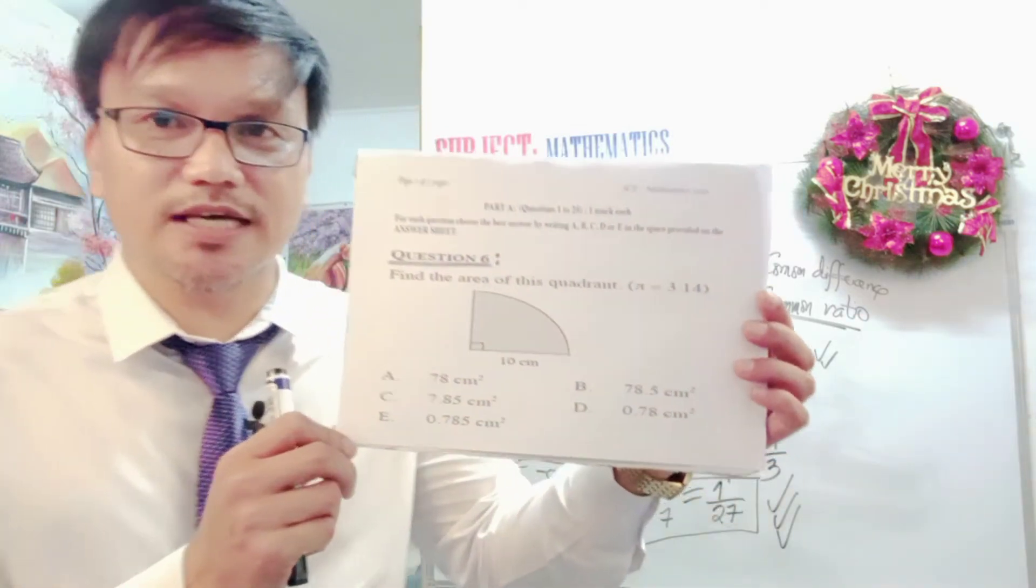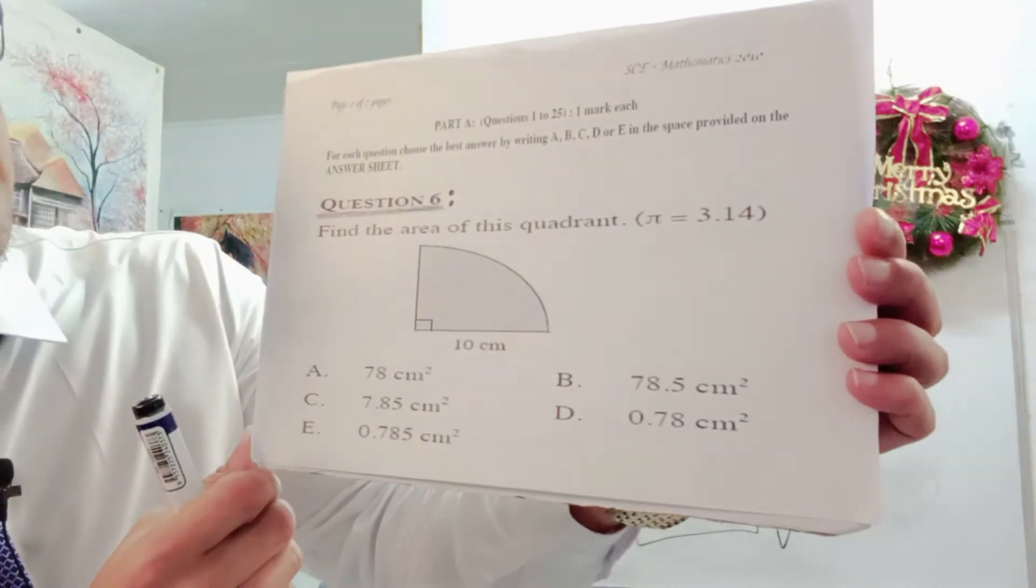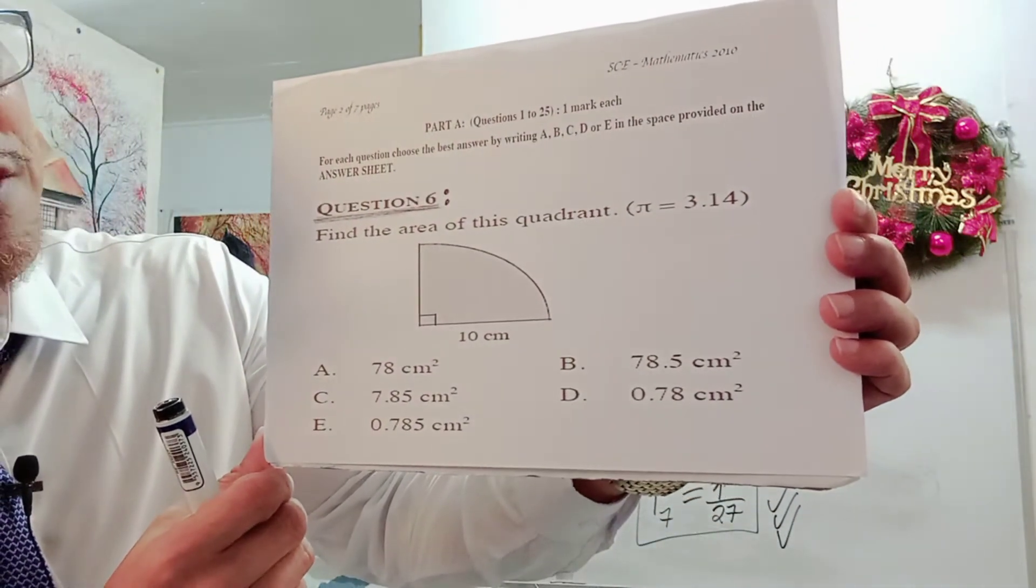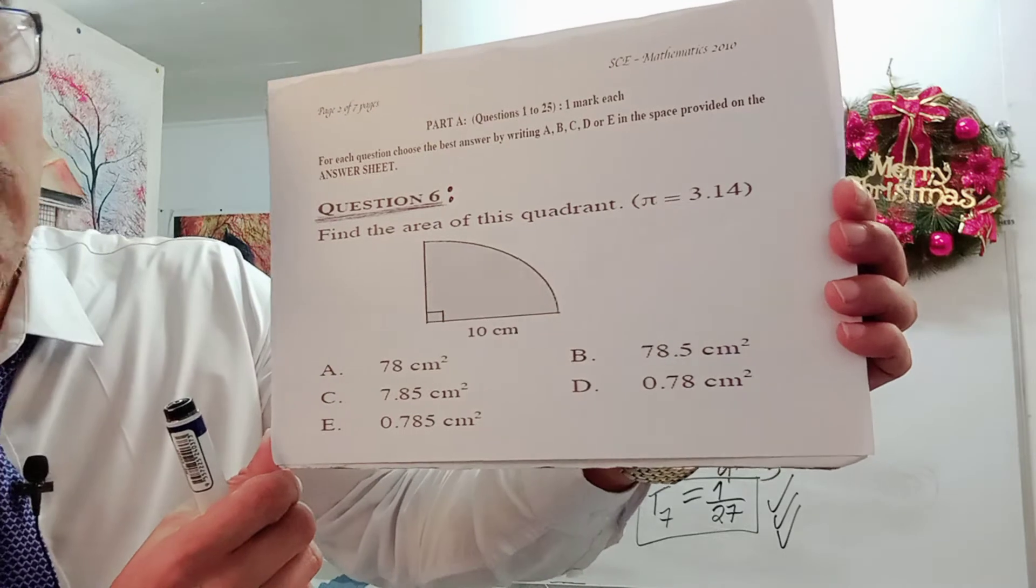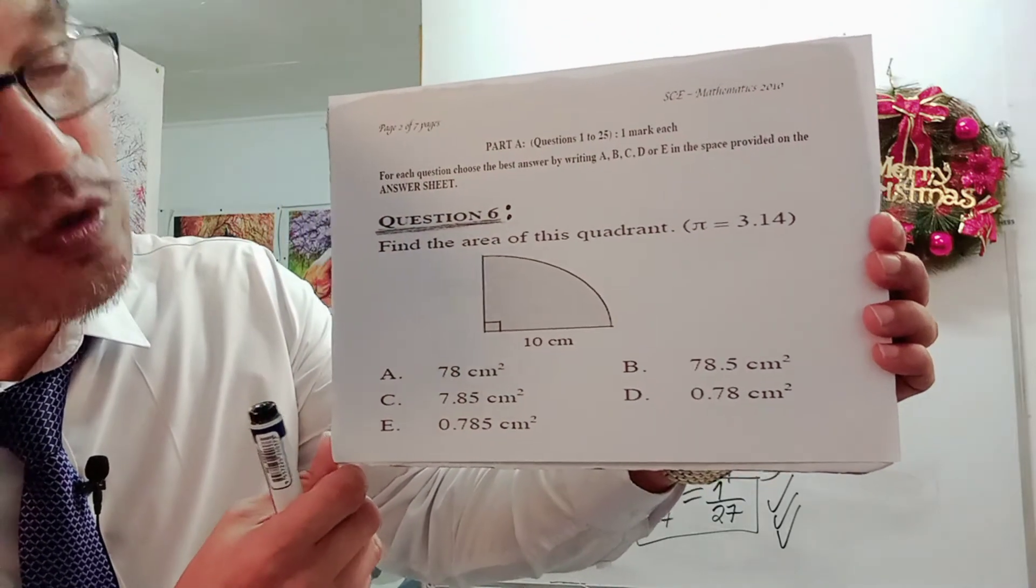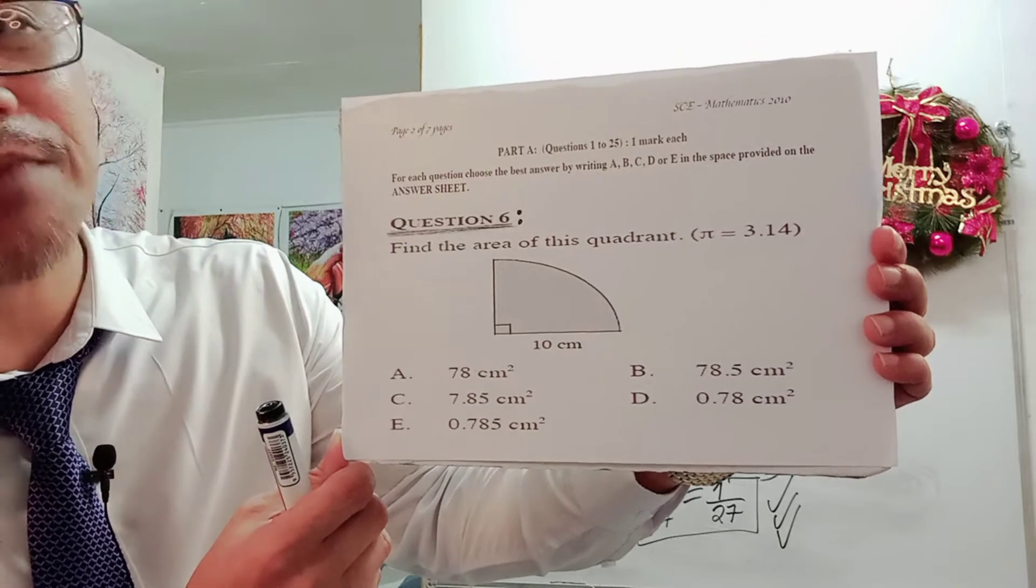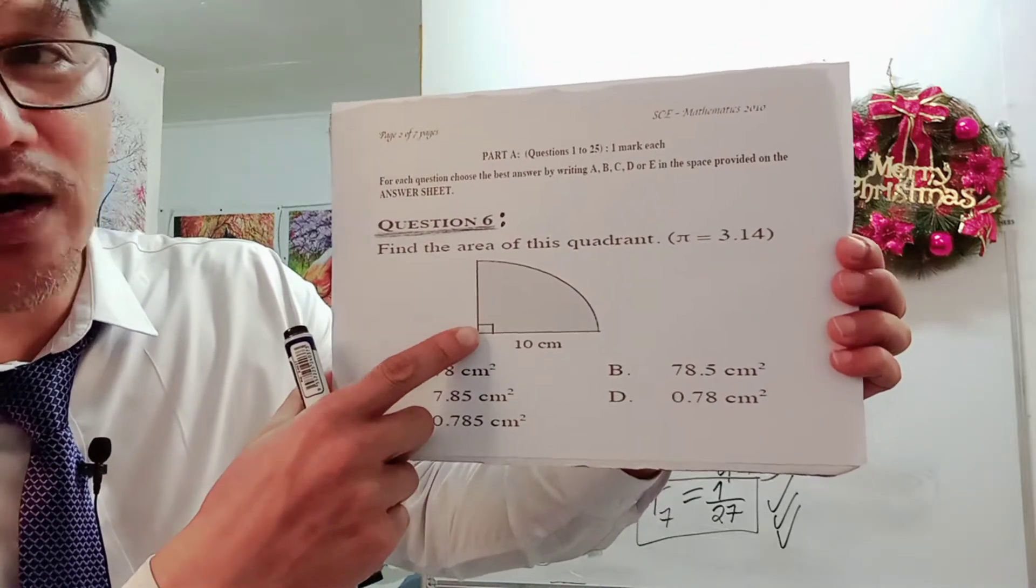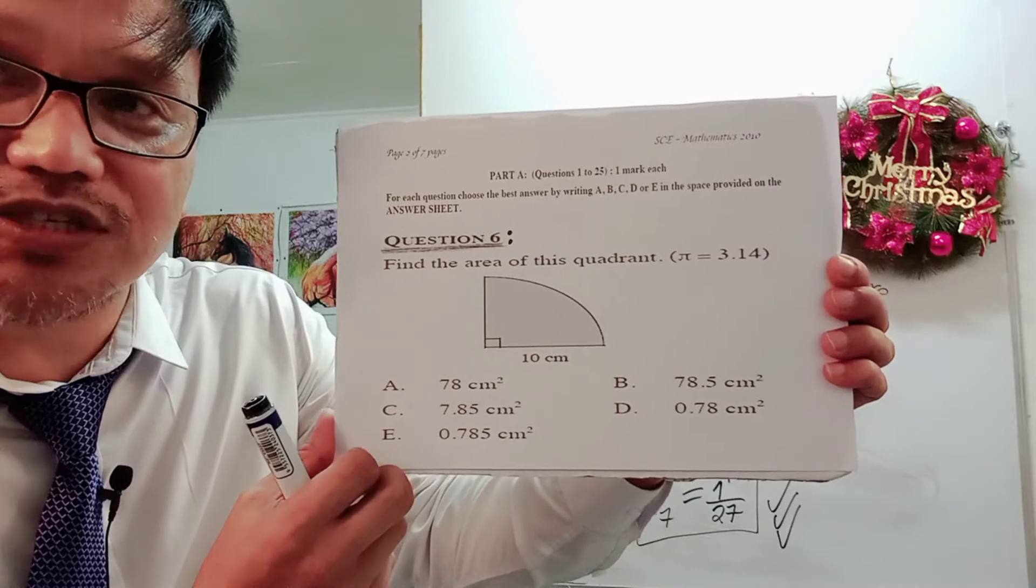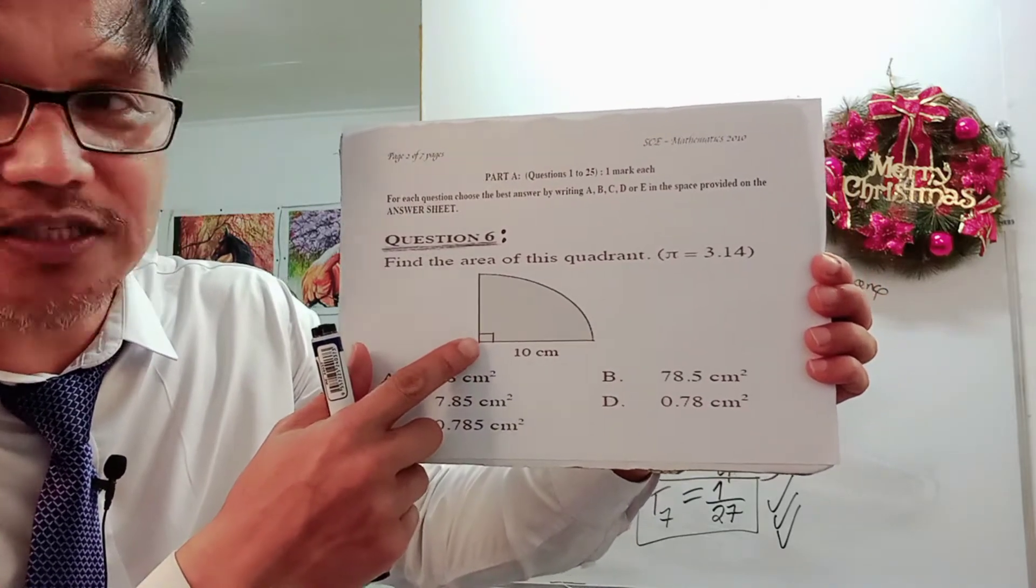This is question number six. The question is find the area of this quadrant by using the value of pi as equal to 3.14. So this is a quadrant. A quadrant is a quarter of a circle.